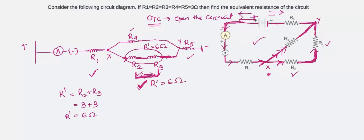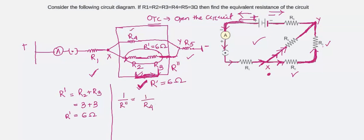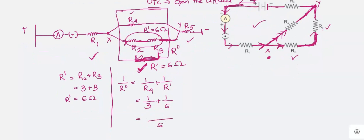Now R dash and R4 are in parallel with each other. Let me solve this part next and name it R double dash. Since the resistors are in parallel, I write: 1/R double dash = 1/R4 + 1/R dash. R4 is 3 ohm and R dash is 6 ohm. The LCM is 6, so we get 2 + 1 = 3 over 6, which equals 1/2. So R double dash comes to be 2 ohm.